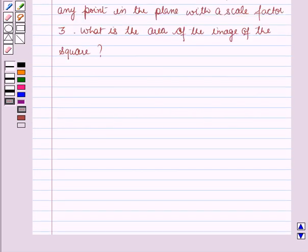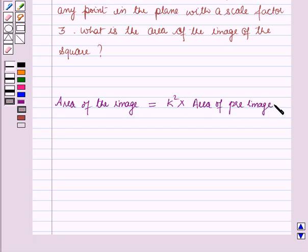Now before starting the solution of the question, we should know about a result, which is: area of the image is equal to k² times area of pre-image, where k is the scale factor.